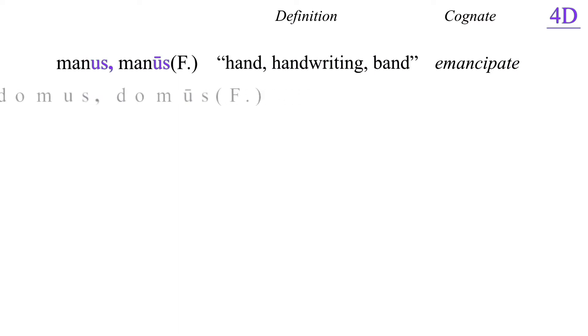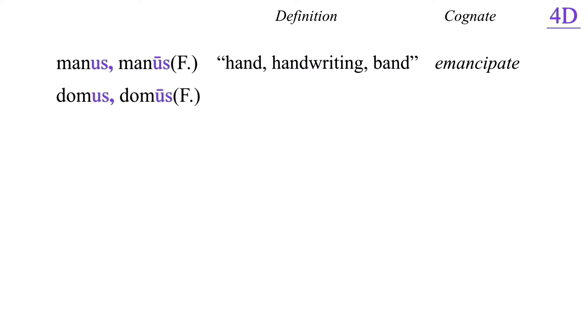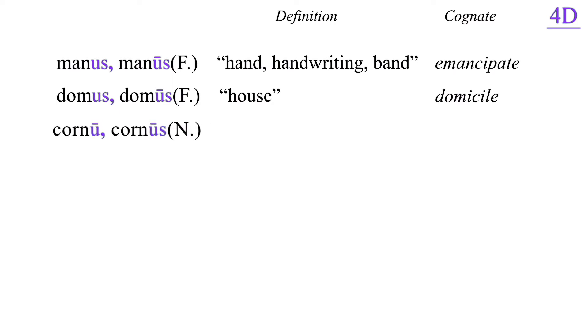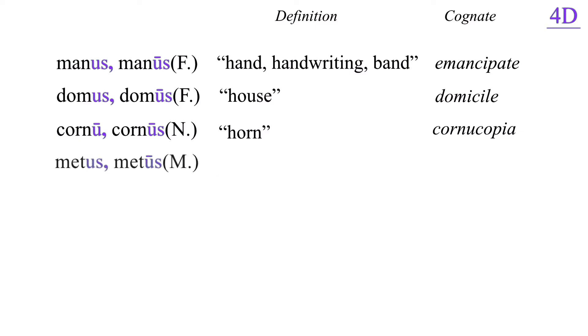Domus, domus, feminine, house. Cornu, cornus, neuter, horn. This is where we get the modern word cornucopia.